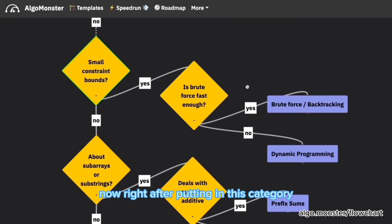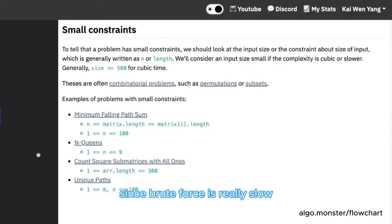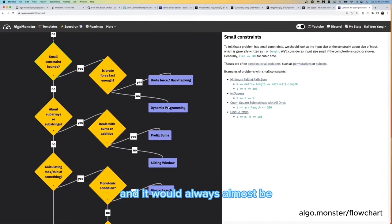Now, after putting in this category, the first thing you want to do is consider whether or not brute force is applicable. For brute force, you want to see if the constraints are really small. Since brute force is really slow, it will only be fast enough on problems where the constraints are really small. For example, this one here, n is really small, it's only up to nine. And this is very clear that brute force will be used. And typically if brute force isn't a valid solution or if it's too slow, you would want to consider dynamic programming and it would almost always be the correct approach if it isn't brute force.